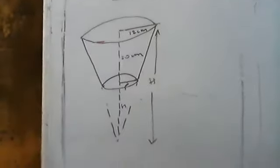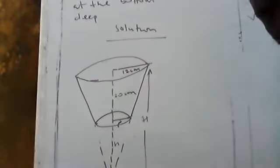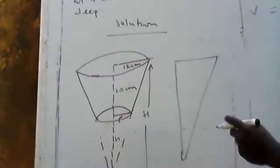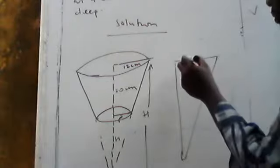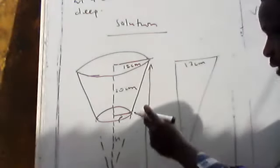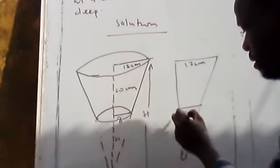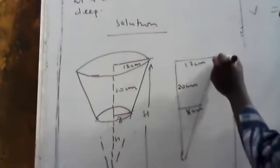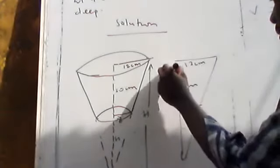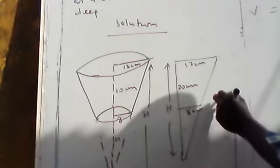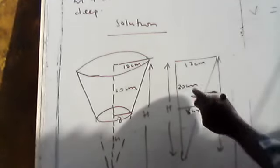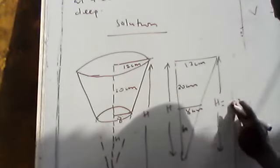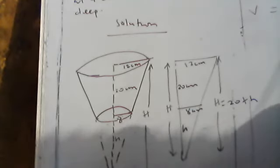Now I want to do something very important here. I will draw a triangle from the diagram. From here to here is 12 cm for the bigger radius, this side is 8 cm, and from here to here is 20 cm. This place is small letter h, and from the top to here will be 20 plus h. Continue from here.